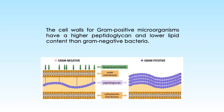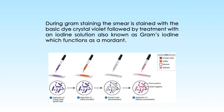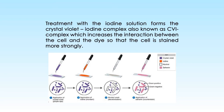The cell walls of gram-positive microorganisms have a higher peptidoglycan and lower lipid content than gram-negative bacteria. During gram staining, the smear is stained with the basic dye crystal violet, followed by treatment with an iodine solution known as Gram's iodine, which functions as a mordant. Treatment with the iodine solution forms the crystal violet-iodine complex, also known as the CVI complex, which increases the interaction between the cell and the dye so that the cell is stained more strongly.